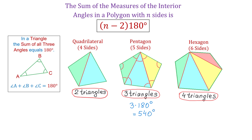In a quadrilateral we have two triangles, so 2 times 180 degrees equals 360 degrees. And in a hexagon that has four triangles, 4 times 180 degrees equals 720 degrees.